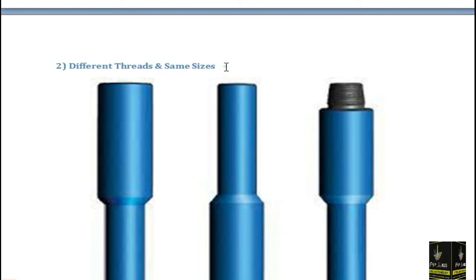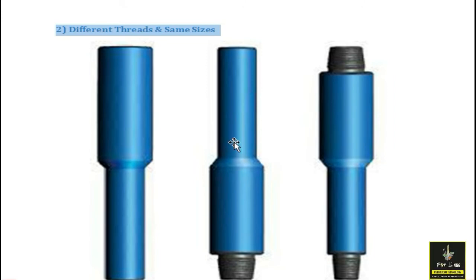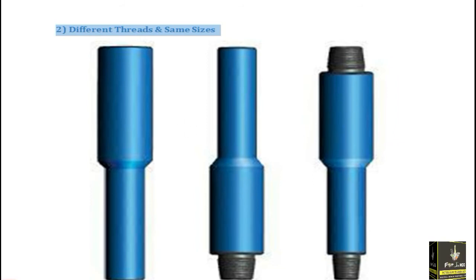In the second scenario, we have different threads but the same sizes. The threads are different — one side is internal (box) and the other is external (pin). Different thread types are available, but the sizes are the same on both ends. So the size is the same but the thread connection is different.